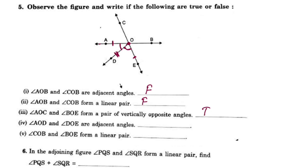Next: COB and BOE — these two angles form a linear pair, so this statement is true.